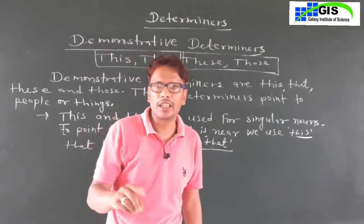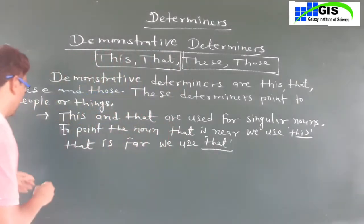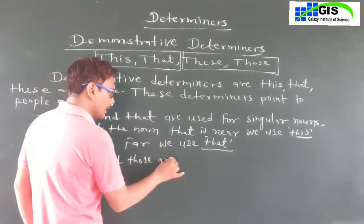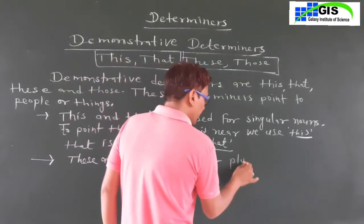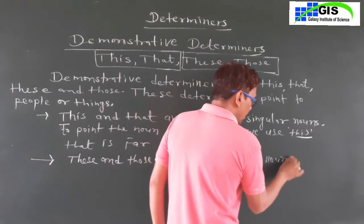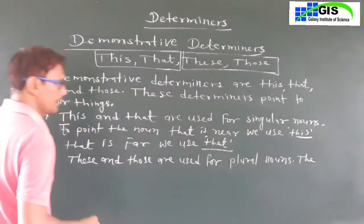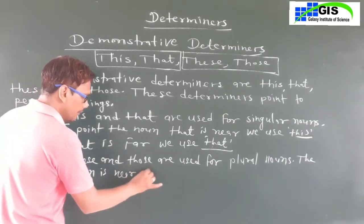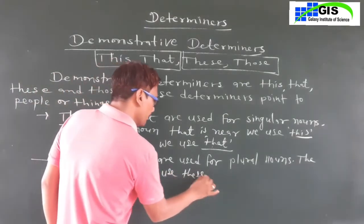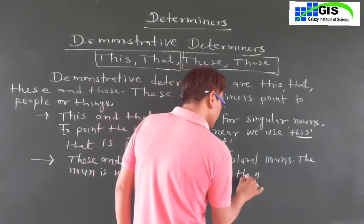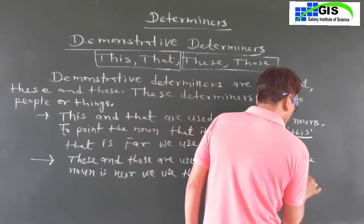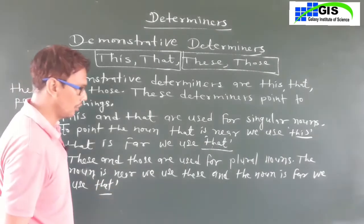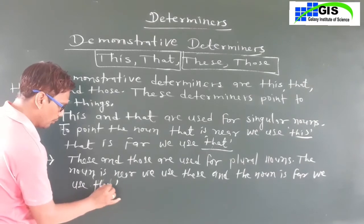These and those are used for plural nouns. The noun is near — we use 'these'. The noun is far — we use 'those' (T-H-O-S-E). So to summarize: we use this, that, these, and those accordingly.